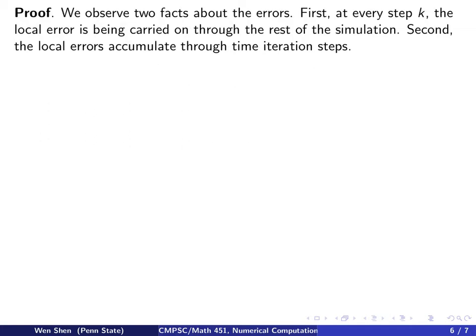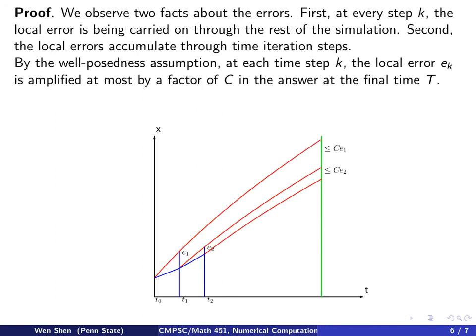Let's see how we can prove that. So first we make two observations, two facts about the errors. First observation, at every time step k, the local error is being carried on through the rest of the simulation. Second, the local error accumulates through time iteration steps.